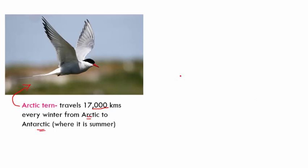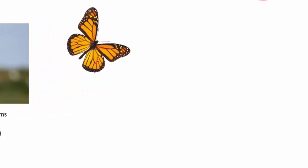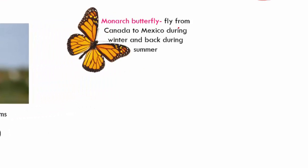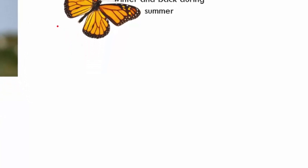The most common example of migration is the monarch butterfly. This butterfly flies from Canada to Mexico during winter and back to Canada during summer. If you search for monarch butterfly migration, you will see how many butterflies fly together at the same time.